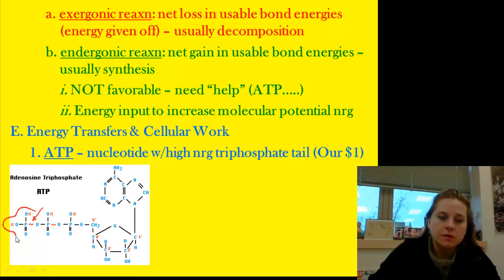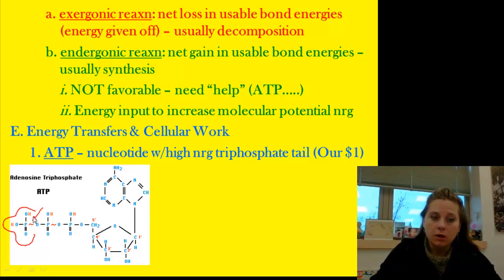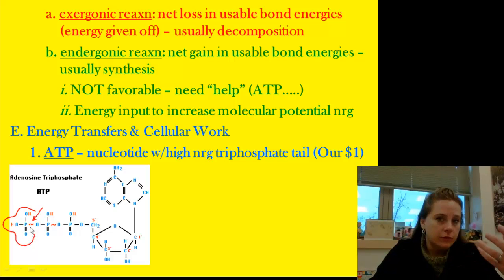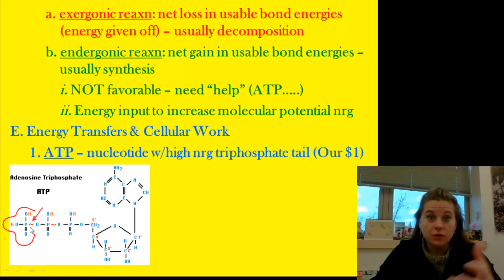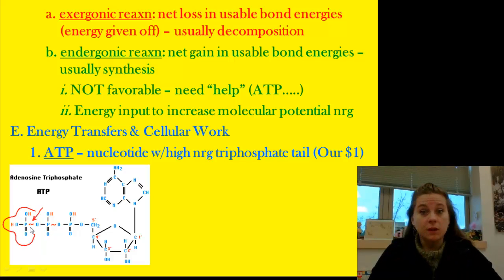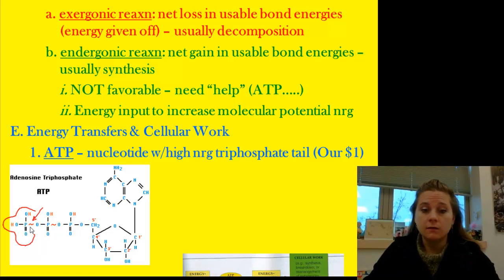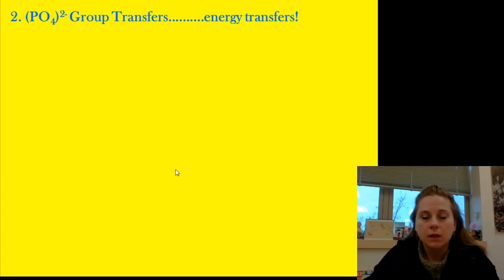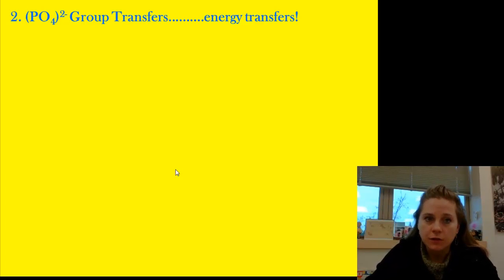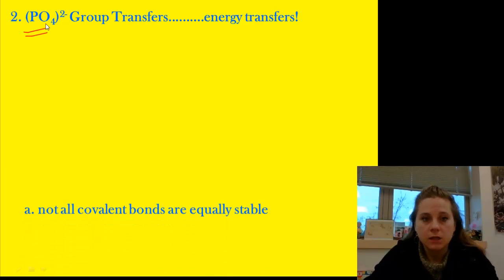When the cell needs energy to do work, we break off that last phosphate bond and it releases a small amount of energy for the cell to do whatever it needs — maybe move something against the concentration gradient in active transport. The PO₄ group is what causes the energy transfer, so it's a super important functional group.